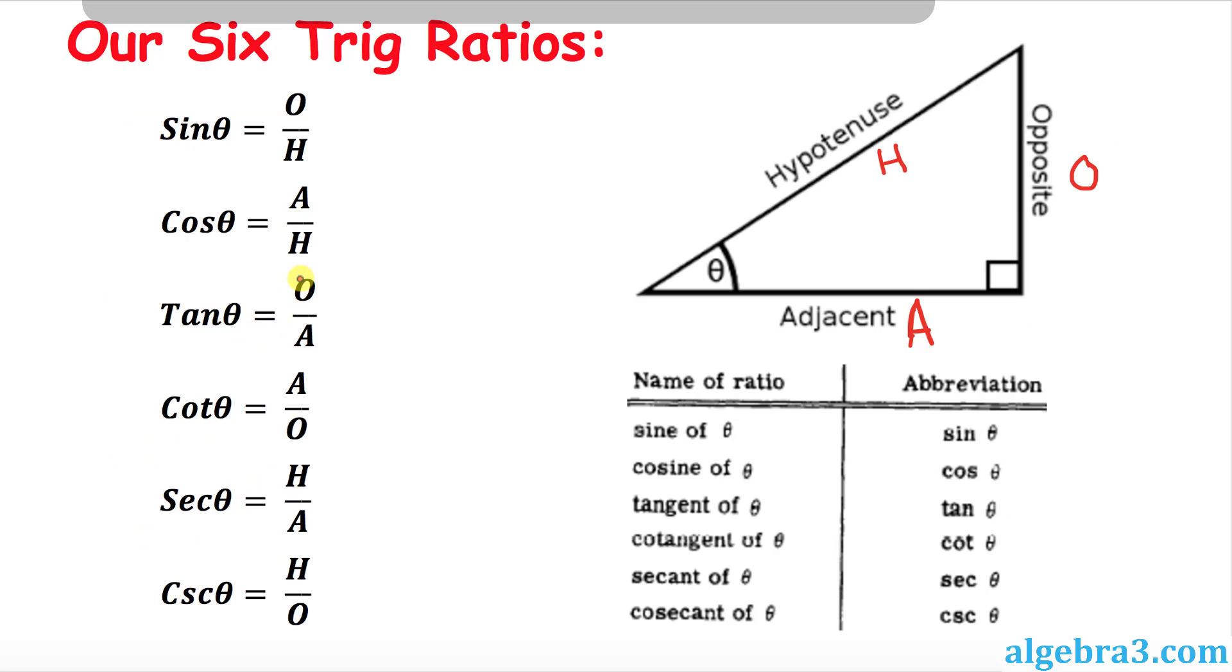Now let's go over our six trig ratios that will be really helpful in our future lessons. We already learned sine, cosine, and tangent from our SOHCAHTOA. So the next three trig ratios are cotangent, secant, and cosecant. Just keep this in mind.